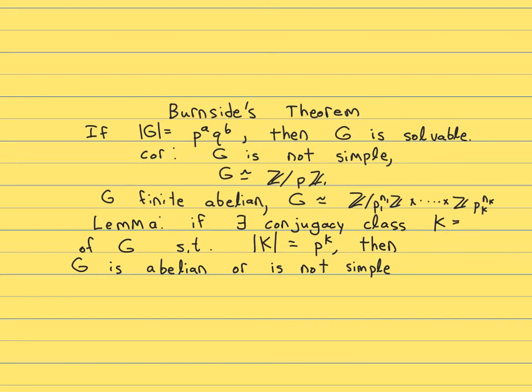And of course, we have to make sure we're talking about a conjugacy class that's not the one containing the identity. Note that by power of a prime, we are allowing one, so if you have a conjugacy class of size one, then you're going to end up in one of these two conclusions.